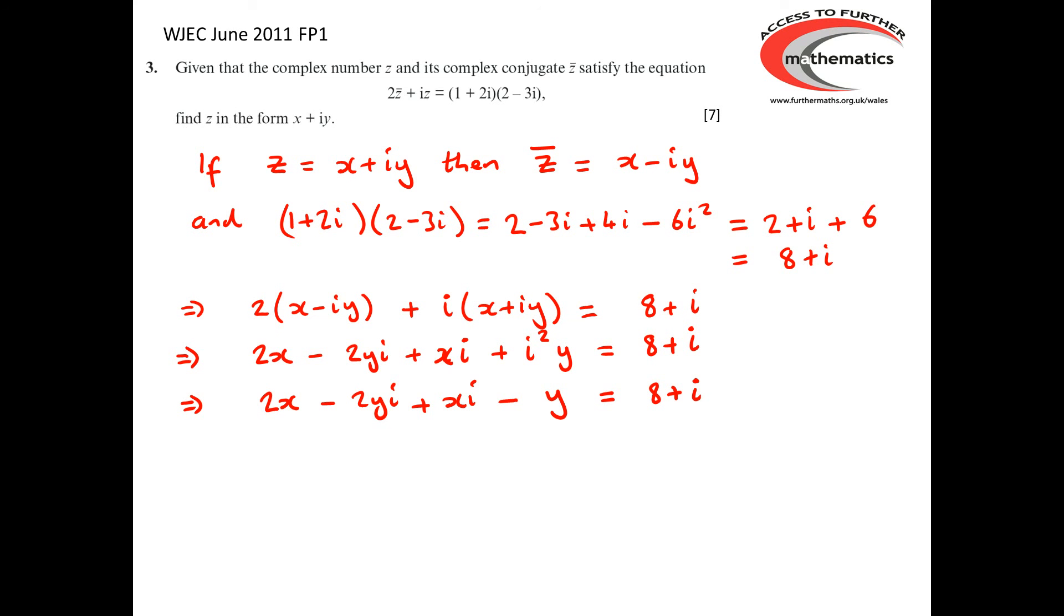Collect together the real terms on the left-hand side. That's the 2x and the minus y. Collect together the imaginary terms on the left-hand side. That's xi take away 2yi. And we end up with (2x - y) + (x - 2y)i must equal 8 + i.